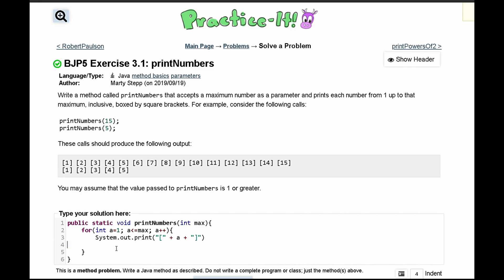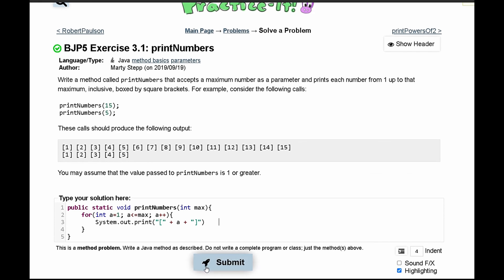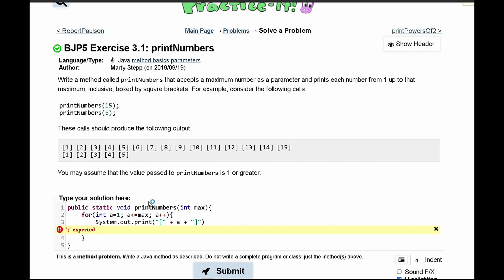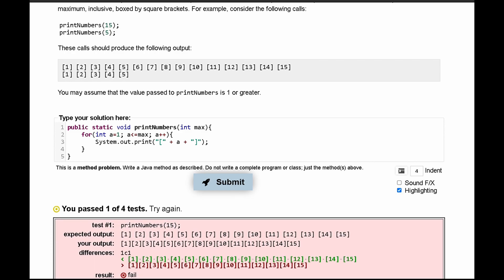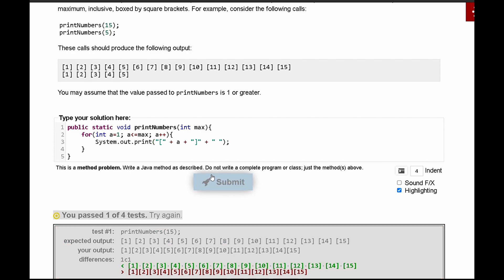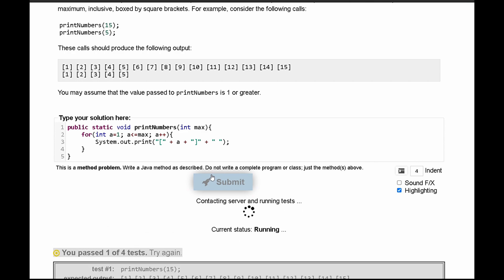You can get rid of this line 4. This should be the code that will give us this output. You have a semicolon here. And we also need a space after every single one so they don't print right after the other.